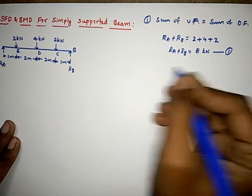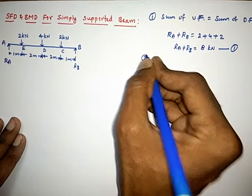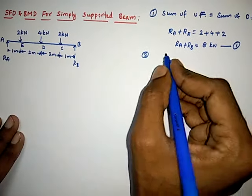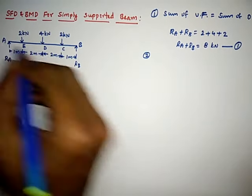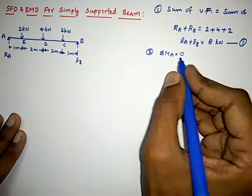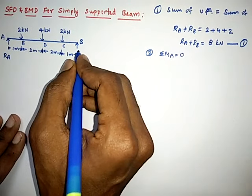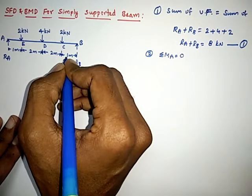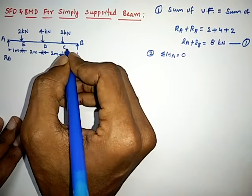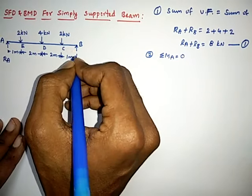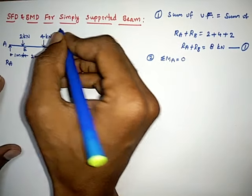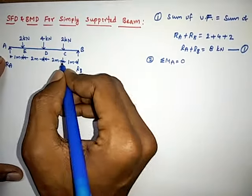The second condition is that the sum of moments about any point must be zero to keep the beam in equilibrium. We take the sum of moments about A and equate it to zero. Anti-clockwise moments are taken as positive (sagging positive), and clockwise moments as negative (hogging negative).